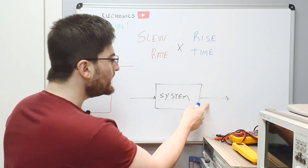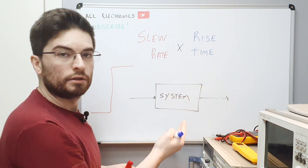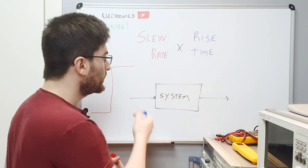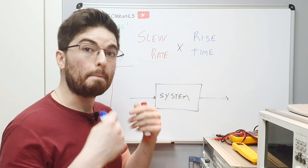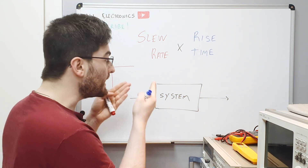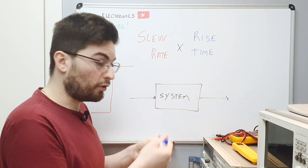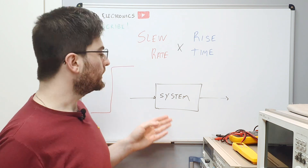The signal at the output will try to swing to the maximum, but it will be limited by the maximum rate the system can swing from a real-life circuit perspective.